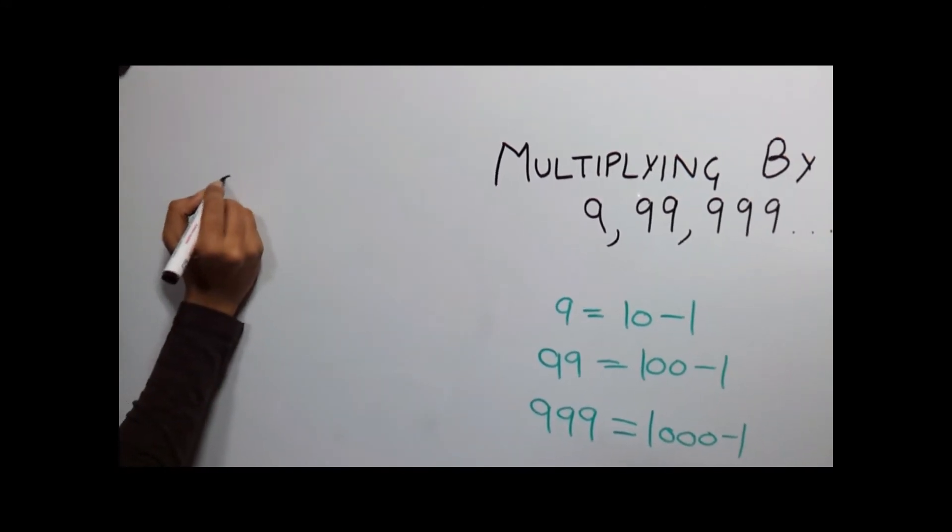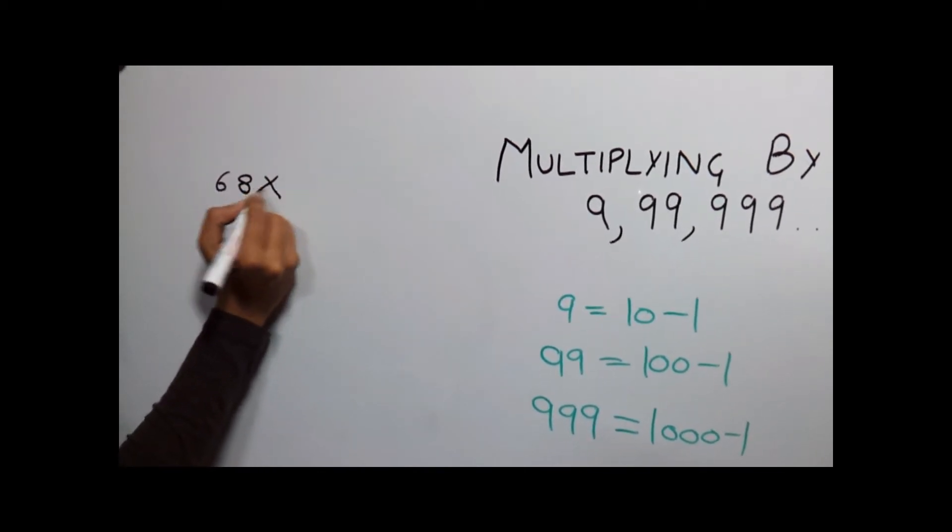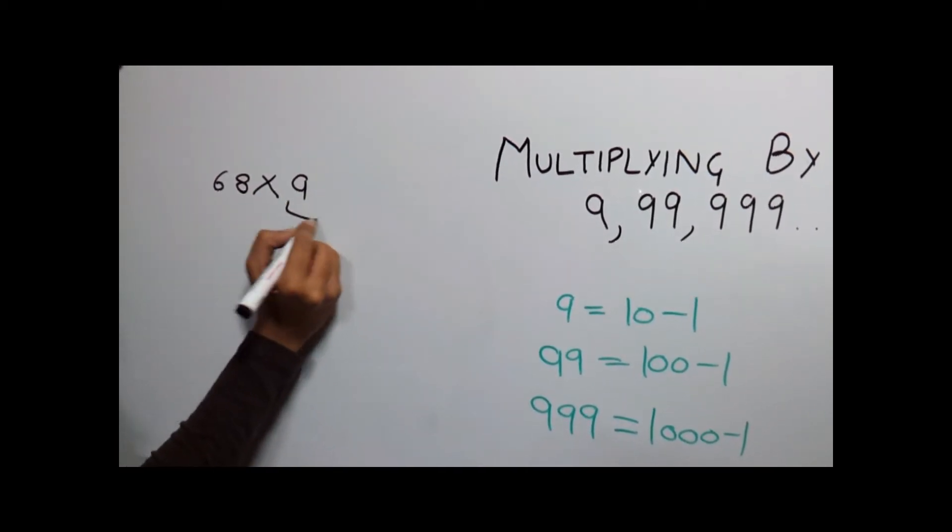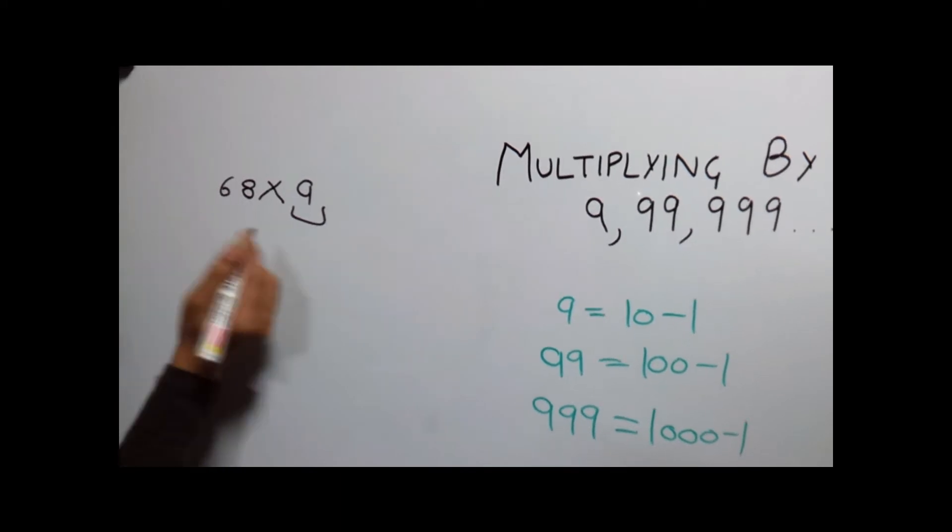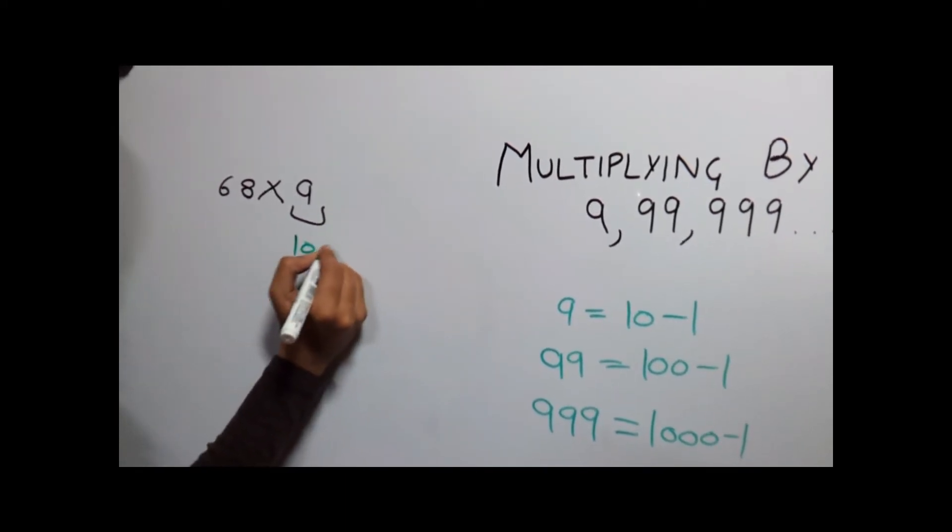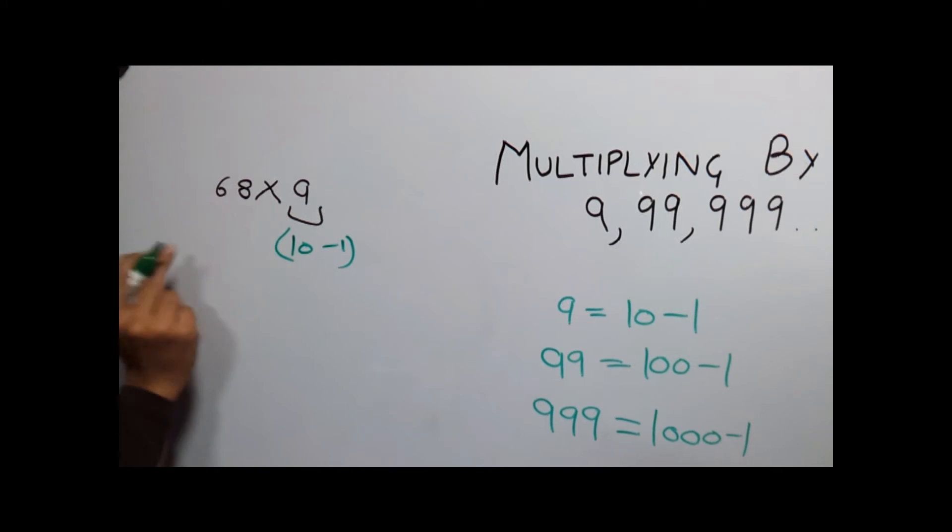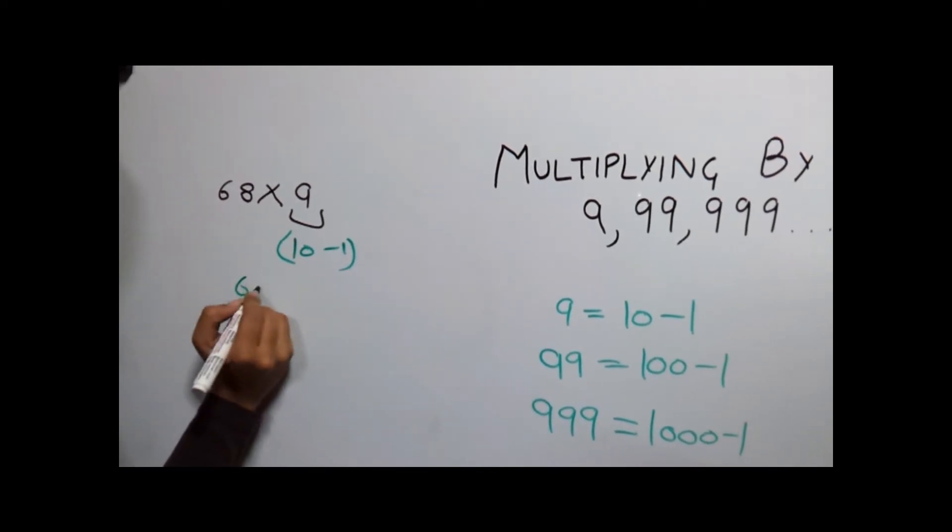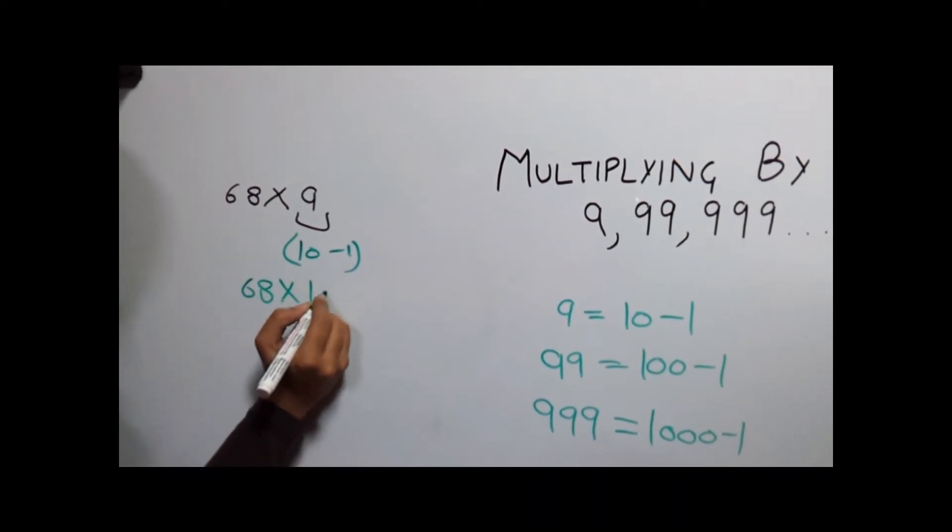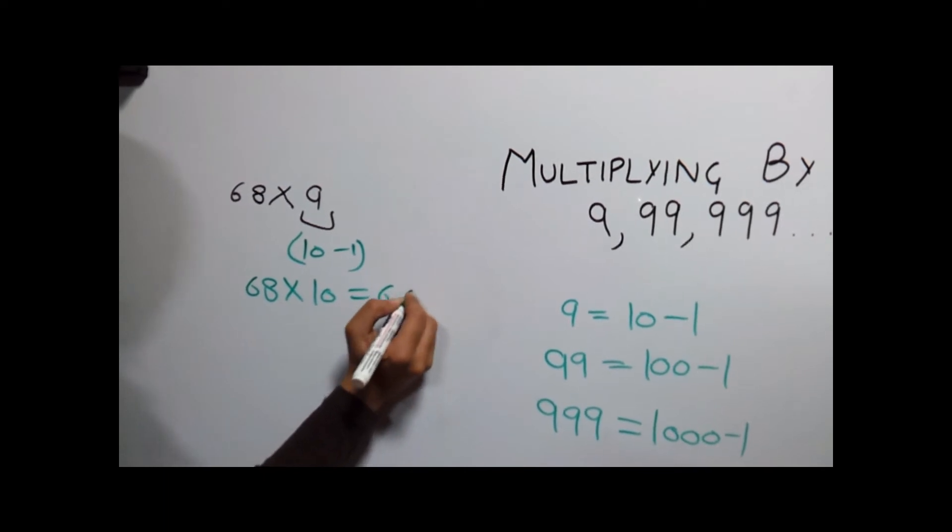Let's take 68 into 9. Now this 9 can be written as 10-1. Multiplying this by 10 gives us 68 into 10, 680.